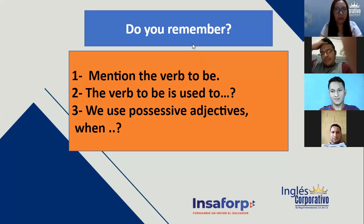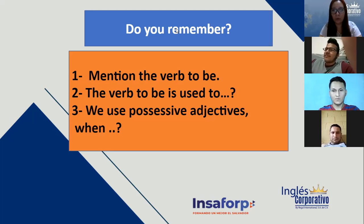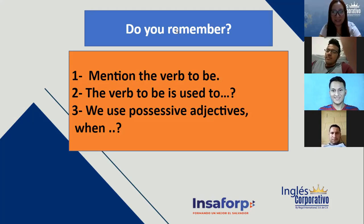Are, is — correct! Those are the verb 'to be' versions in present. Okay, the verb 'to be' is used — para qué utilizamos el verbo 'to be'? Veamos volunteers — ¿qué expresamos con el verbo 'to be', para qué lo usamos? Nadie se acuerda?